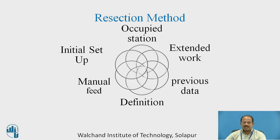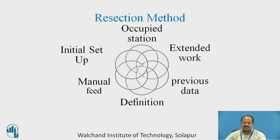On the other hand, in extended work, the initial work was done earlier and we now want to set up the instrument at a subsequent location to continue new work. This new work must have perfect connectivity with the previous work, so we require previously worked-out data in the instrument, and those locations must also be accessible from the new station. This is called the resection method. There are more chances of errors in resection, and one must be very cautious.